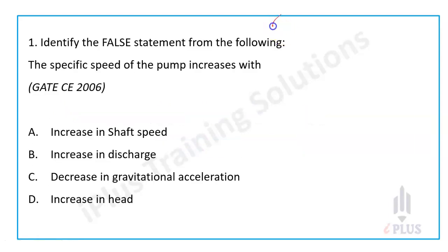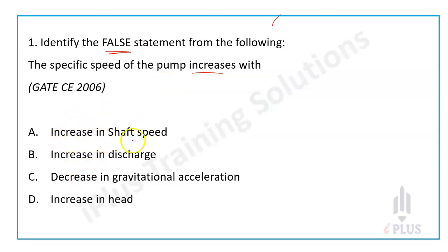Identify the false statement from the following: the specific speed of the pump increases with — option A: increase in shaft speed, option B: increase in discharge, option C: decrease in gravitational acceleration, option D: increase in head.